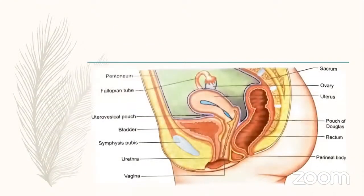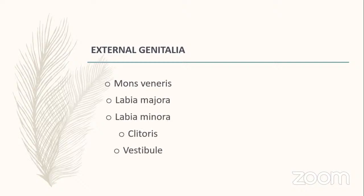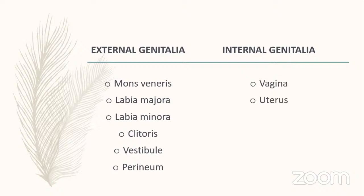Starting with external genitalia: the parts included are mons veneris, labia majora, labia minora, clitoris, vestibule, and perineum. For internal genitalia, the parts are vagina, uterus, fallopian tubes, and ovaries.